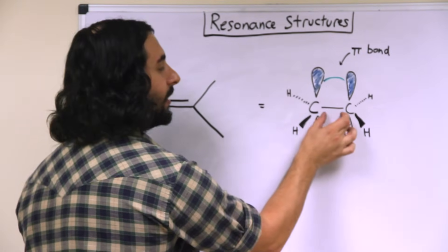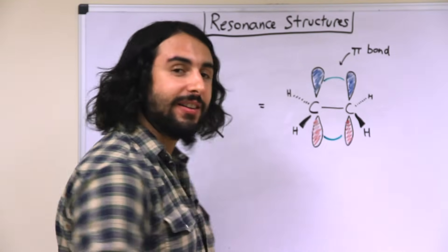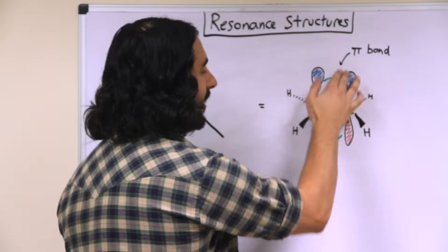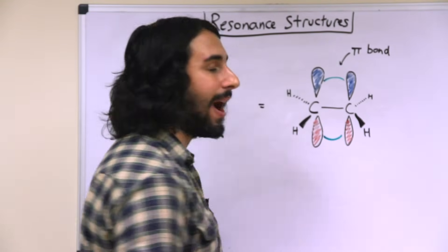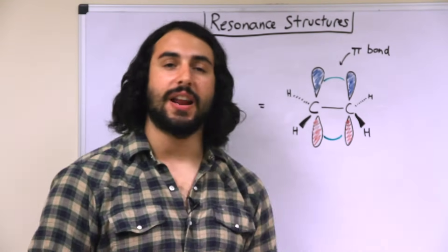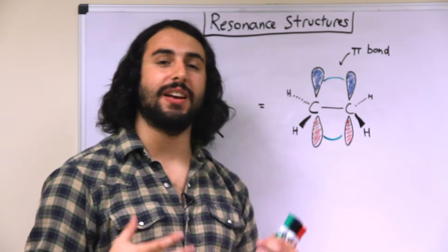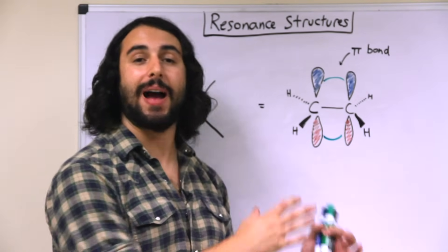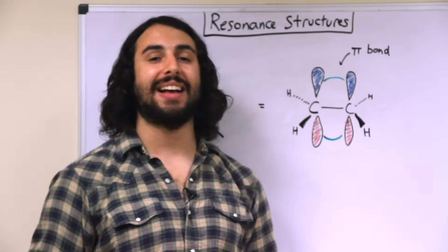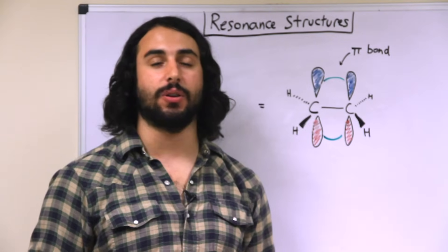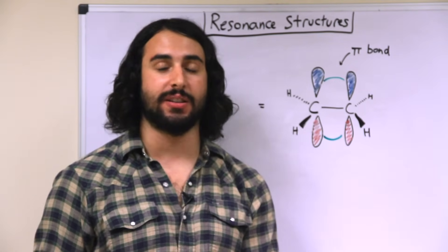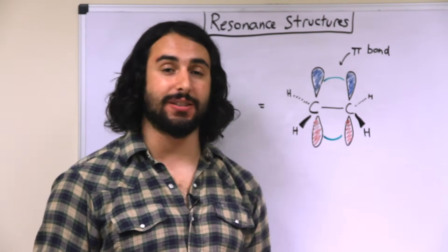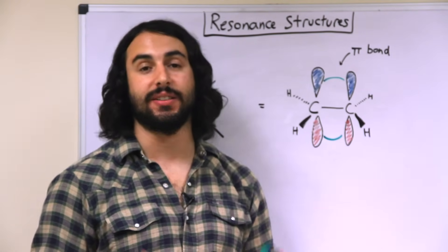It is the overlap of these p orbitals that is generating the pi bond. This carbon-carbon bond is the sigma bond, and this is the pi bond. The reason this is important is because it is the electrons in pi bonds as well as electrons present as lone pairs that are the ones going to participate in resonance.